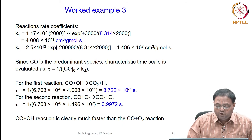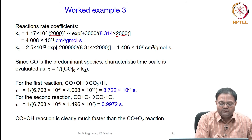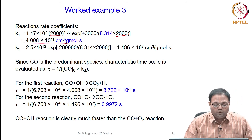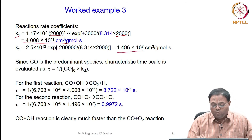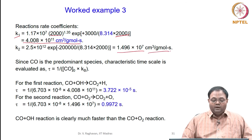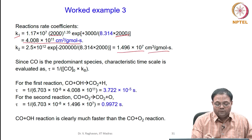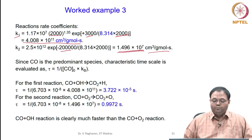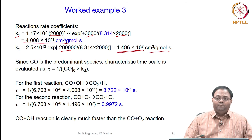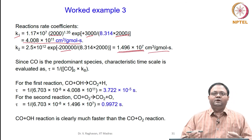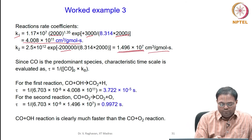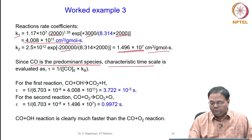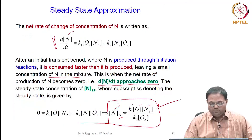The rate coefficients at 2000 K are evaluated: K1 equals 4.008 × 10¹¹ cm³/(g-mol·s) and K2 equals 1.496 × 10⁷ cm³/(g-mol·s). Even though K2 has a pre-exponential factor 5 orders of magnitude higher, its much higher activation energy results in K2 being 4 orders of magnitude lower than K1 at this temperature.